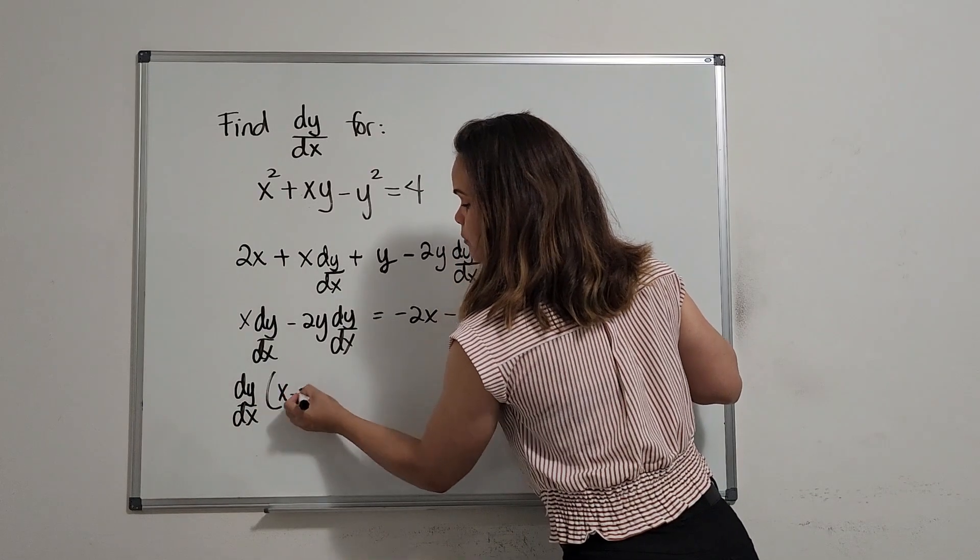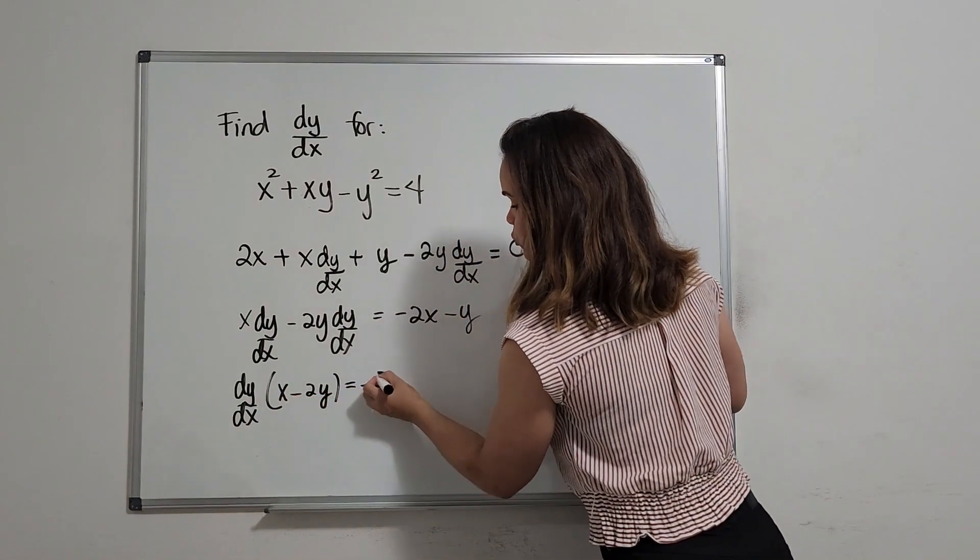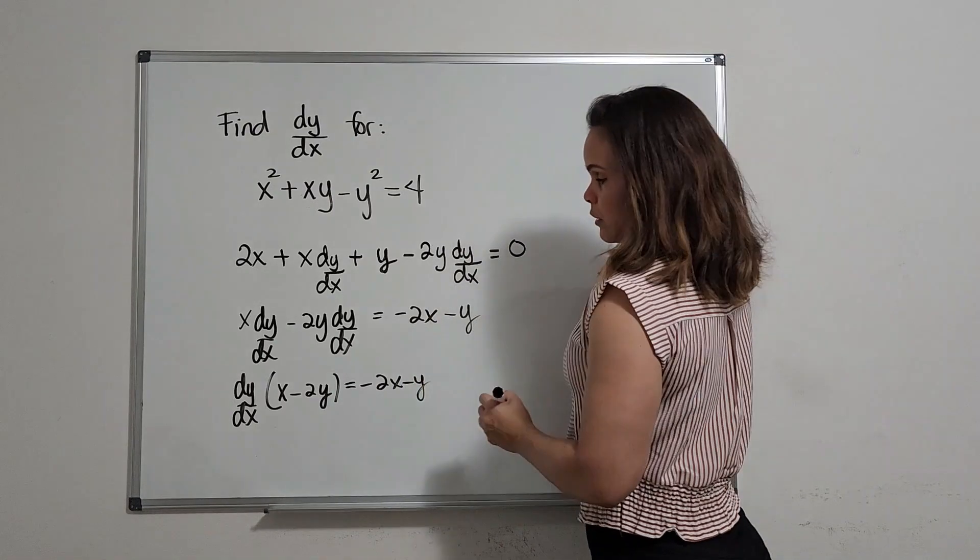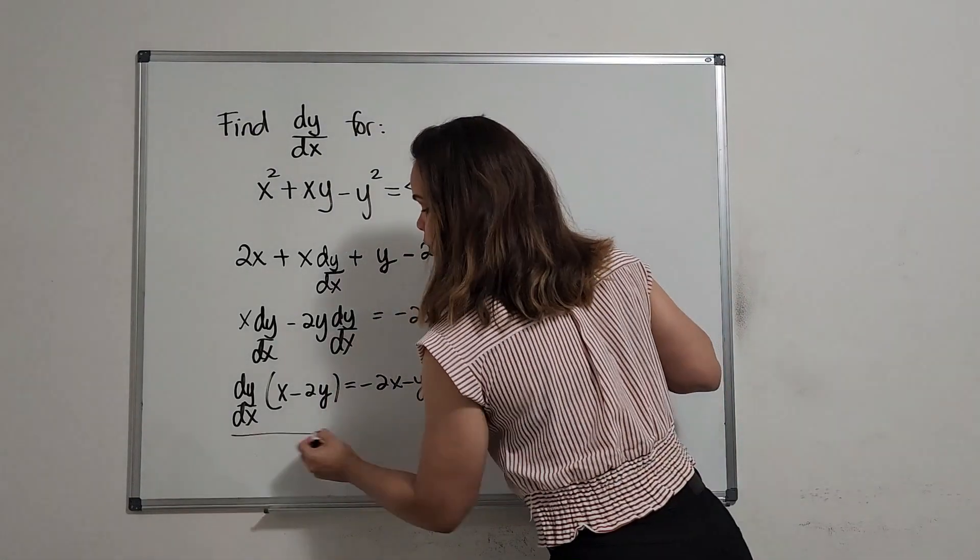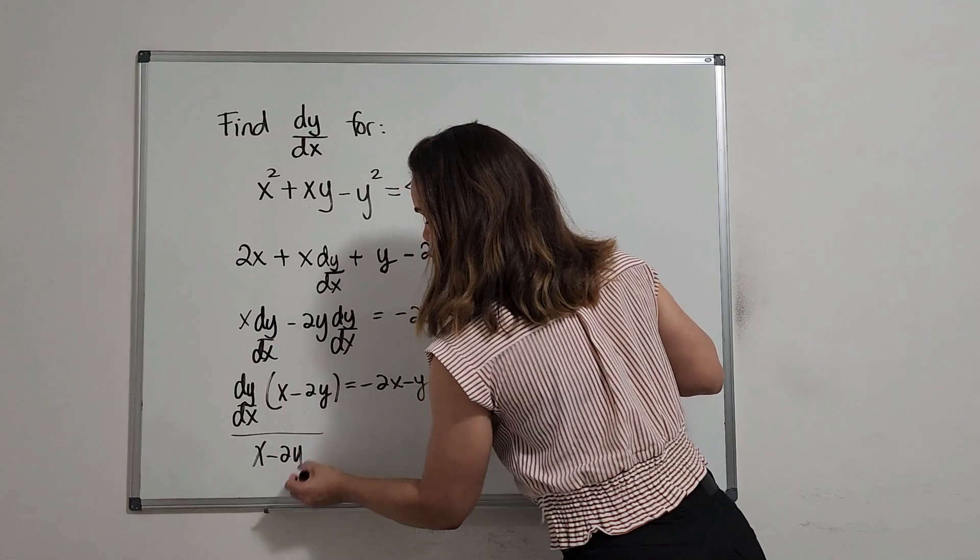So I'm left here with x minus 2y equal to minus 2x minus y. And I need to solve for dy dx, so I'm going to divide by x minus 2y.